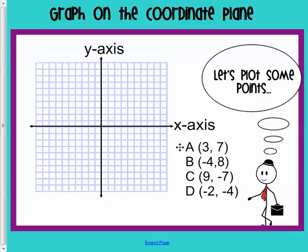We know that our first point is A, and it's at 3 comma 7. Start at the origin, and move over 1, 2, 3, and then go up 1, 2, 3, 4, 5, 6, 7. So, we plot it, and we label it A.